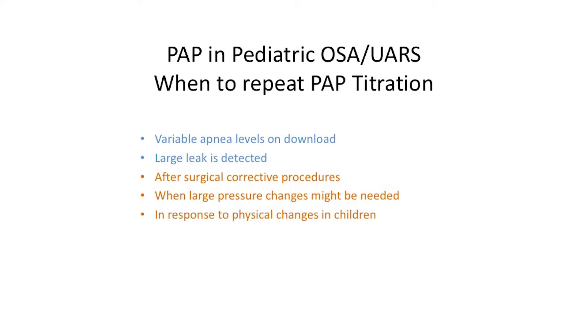When should you repeat titration? A given pressure is applicable to a given physiological state and structure of the upper airway. If a child gets an upper oral appliance such as a maxillary expander, that immediately changes the dynamics of the upper airway, so the CPAP titration should be done while the appliance is in place. If the appliance is removed, the dynamics change again and you need to retitrate. Another reason to retitrate is if the child gains at least 10% of body weight, as that changes the pressure needed to keep the upper airway open.